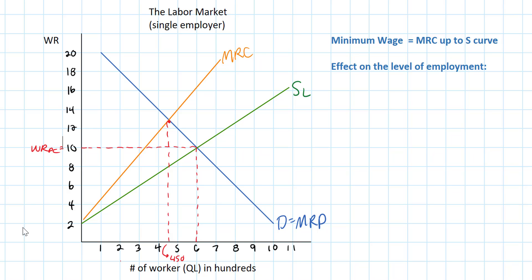The monopsonist, on the other hand, does not have to pay workers ten dollars. Since it's a wage maker, it can get away with paying a lower wage rate and hiring fewer workers. In this model, the wage rate under monopsony would equal eight dollars and only 400 workers would be employed. We can see in the graph that under monopsony fewer workers will be employed than would be under perfect competition.